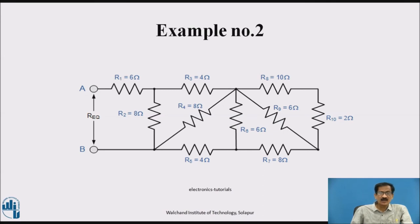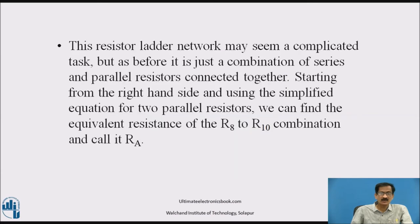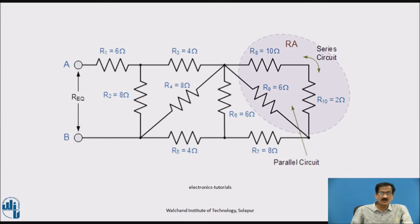Example number 2 involves resistors R1 through R10 in a combination of series and parallel networks — a resistor ladder network. Starting from the right-hand side and using the simplified equation for two parallel resistors, we find the equivalent resistance of the R8 and R10 combination, called RA. To find the equivalent resistance between points A and B, we start solving from the rightmost side.